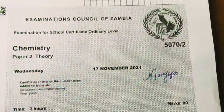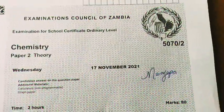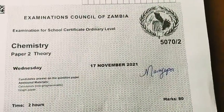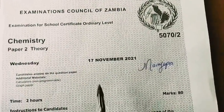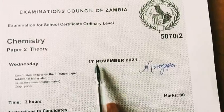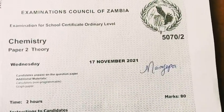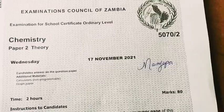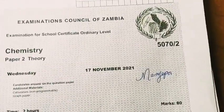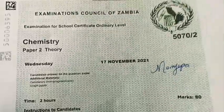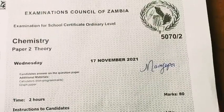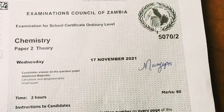Hello everyone, this is Manyepa and I'm here to do this paper which is Chemistry 2, a theory paper from the year 2021, November 17. That's my name right there. I'll do question 1 to 4 of Section A, then I'll do question 5 to 8 in another part.